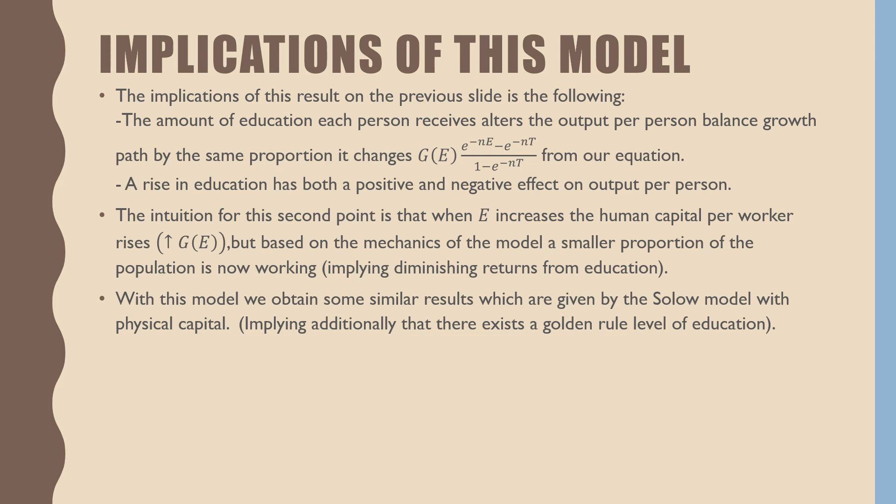With this model, we have some similar results, which are given by the Solow model with regards to physical capital. What we've implied here is that there exists some golden rule level of education for optimal output in the economy.